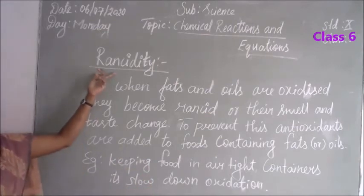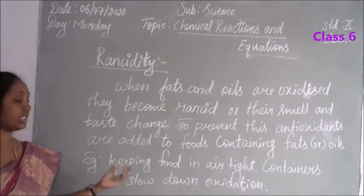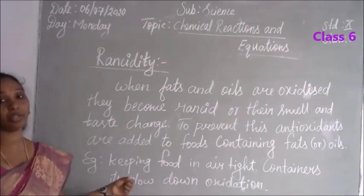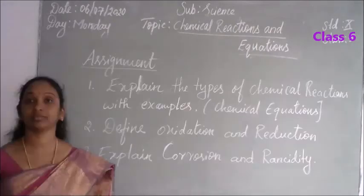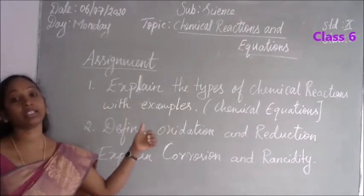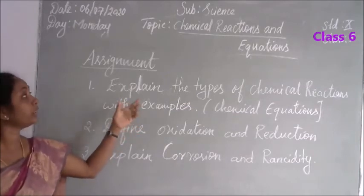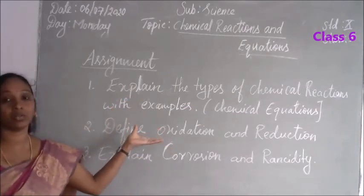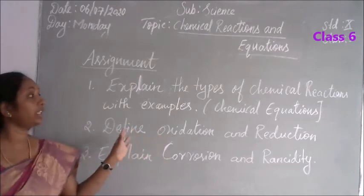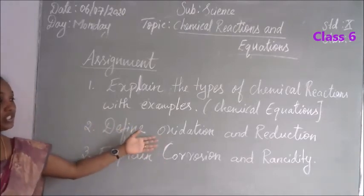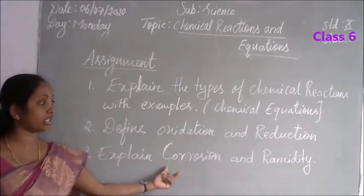Once the fats and oils become oxidized, the taste and the smell will be changed — that is called rancidity. Keeping food in an airtight container prevents the oxygen. Today's lesson is now over. What we discussed: the types of chemical reactions, what are the four types, oxidation and reduction reactions, and I explained the corrosion process and rancidity with examples.